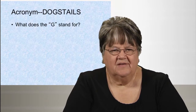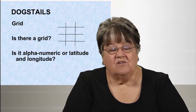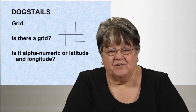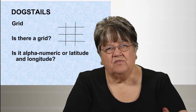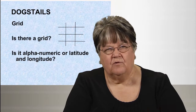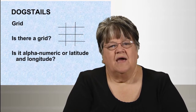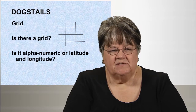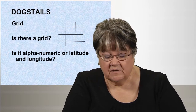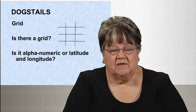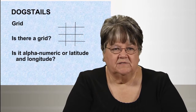G stands for grid. There are two kinds of grids often found on maps: an alphanumeric grid — like B3 or J4, similar to bingo — or latitude and longitude. Latitude and longitude is introduced in about the fourth grade in Arizona, so you can start getting kids used to the idea of these two kinds of grids.